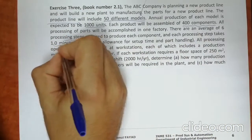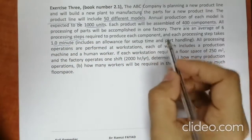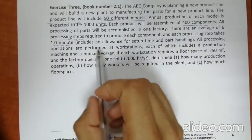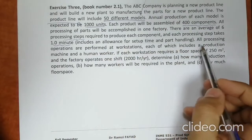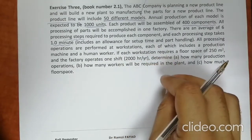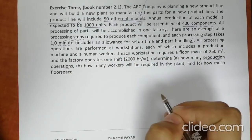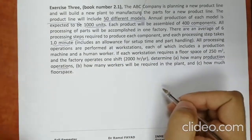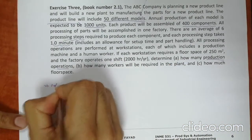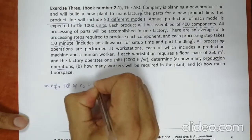There are on average 6 processing steps required to produce each component. Each processing step equals one minute, and there is an allowance for setup time and part handling. All processing operations are performed at workstations, each of which includes a production machine and a human factor. The questions asked are: how many production operations are required, how many workers, and how much floor space?